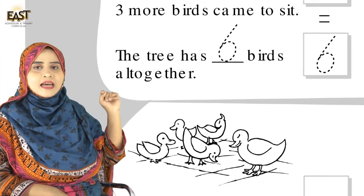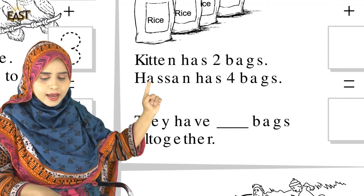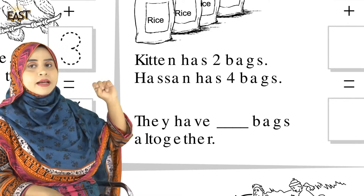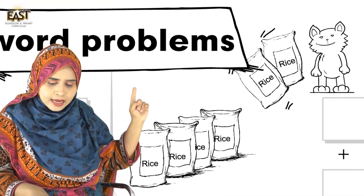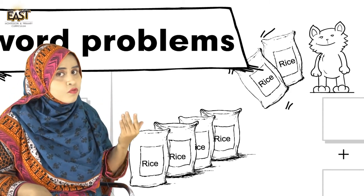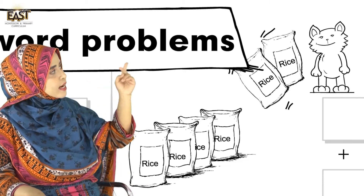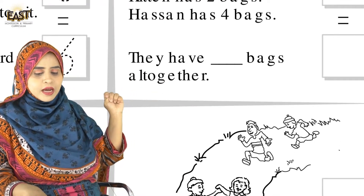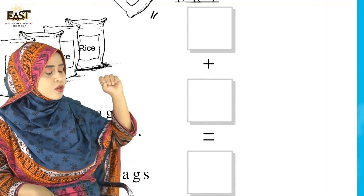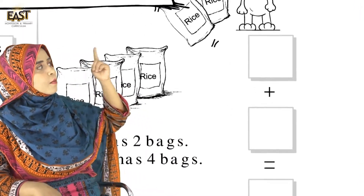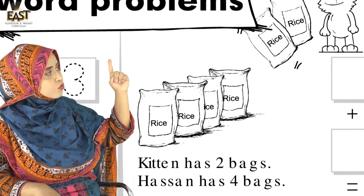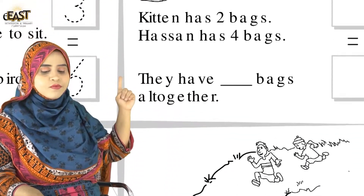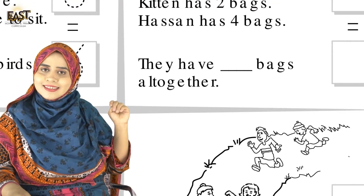Now we move to the next sum. Kitten has 2 bags of rice — Kitten ke paas 2 bags hain. And Hassan has 4 bags — Hassan ke paas 4 bags hain. Now, they have dash bags all together. In the first box we write 2, and in the second box we write 4. When we add both: 2, 3, 4, 5, 6 — so 2 plus 4 makes 6. They have 6 bags all together.